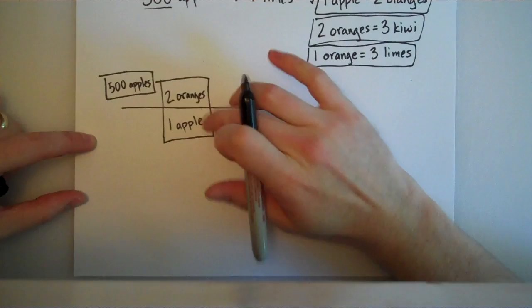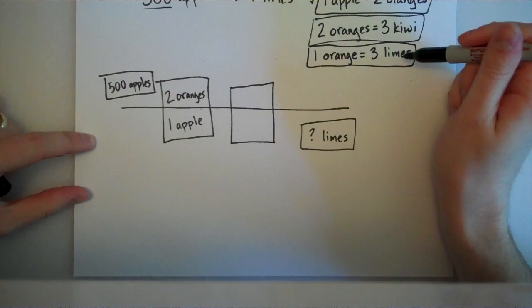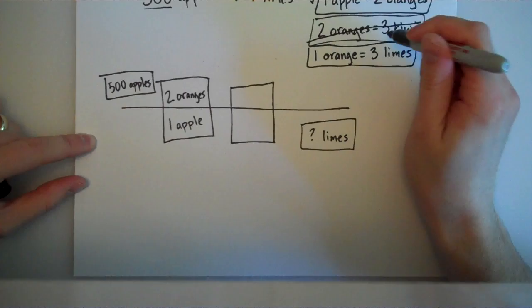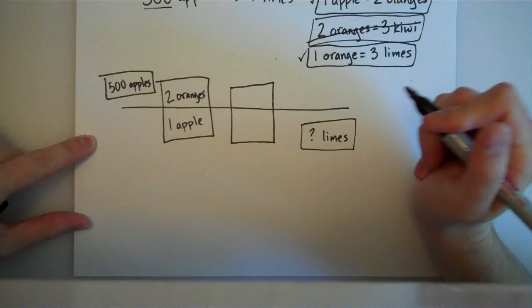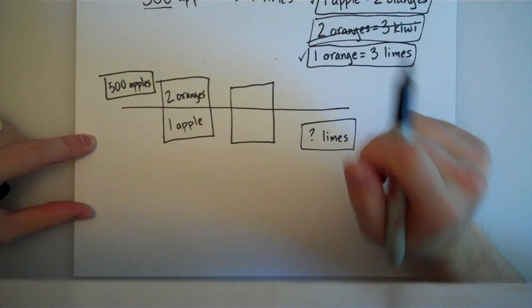Now, the next part is a little tricky because I have a choice here. I could either convert my oranges to kiwi or I could convert oranges to limes. Now, I'm not going to use this kiwi one because despite the fact that I love kiwi, the kiwis don't help me to get into limes. So, instead, I'm going to use this third conversion factor. So, there's a trick there. Remember that you don't have to use every conversion factor that's given to you on a problem. There are a ton of conversion factors out there. Only use the ones you need.